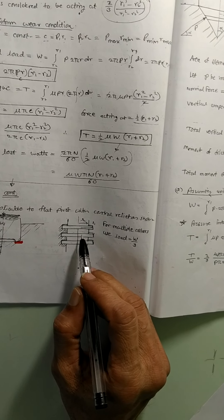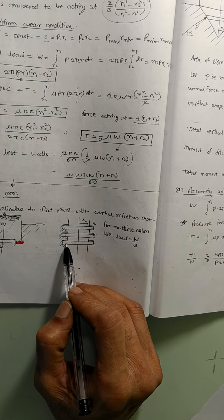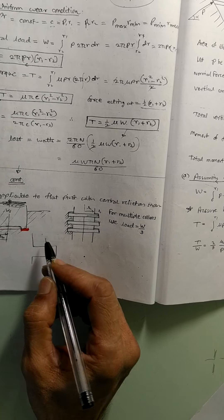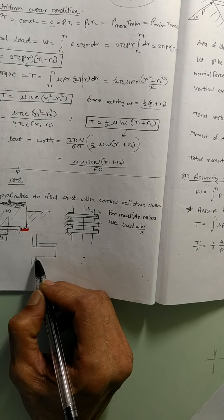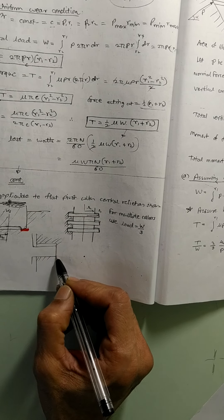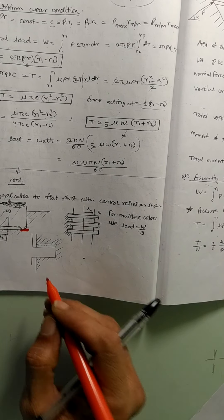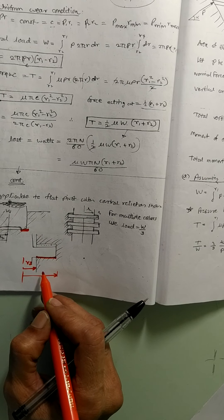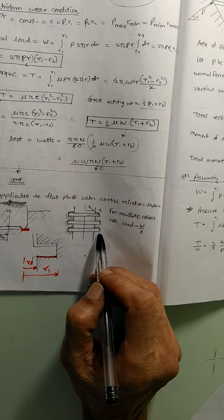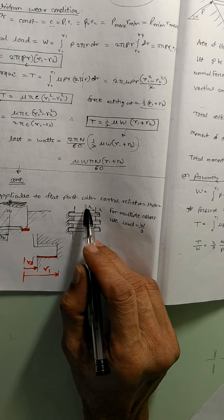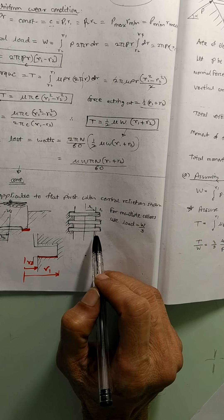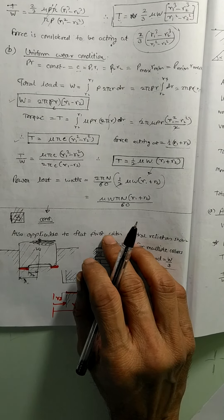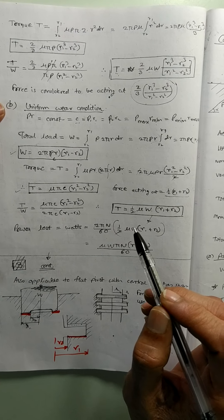One more thing to notice is that sometimes there are multiple collars. The shaft has multiple collars — 1, 2, 3 — and these collars rest on the lower support. Drawing one collar resting in a support: there is a clearance and the contact surface has limits R1 and R2. Moreover, when there are 3 collars, the load per collar is W over 3, since the 3 collars together share the total load W. This we have to take into consideration. That is what is called collar friction, and we have seen two cases — constant pressure and constant wear.